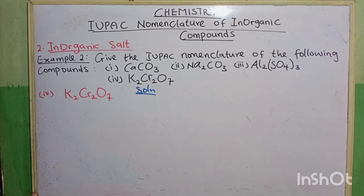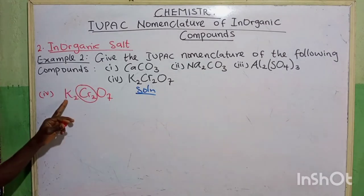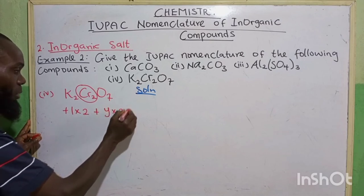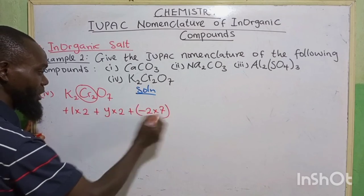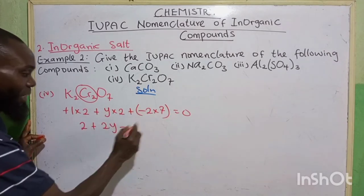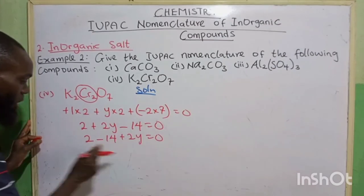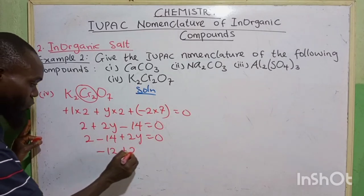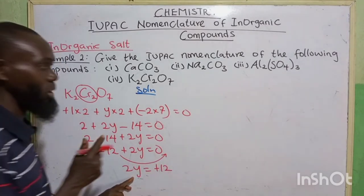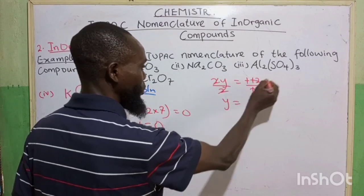Next, we have K₂Cr₂O₇. You have to find the oxidation state of the centered element. The valency of potassium is plus 1, multiplied by 2, plus chromium (Y) multiplied by 2, plus oxygen minus 2, multiplied by 7, equals 0. So 1 times 2 gives 2, plus 2Y, plus minus 2 times 7 gives minus 14, equals 0. Collecting like terms: 2 minus 14 plus 2Y equals 0, giving minus 12 plus 2Y equals 0, so 2Y equals 12, and Y equals plus 6.